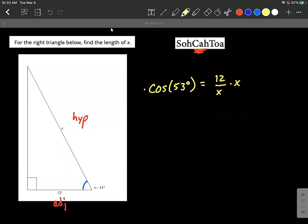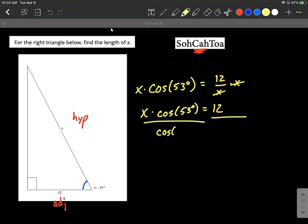We can't solve for x while it's in the denominator. So let's go ahead and multiply both sides by x. This will give us x multiplied by the cosine of 53 degrees equals 12. x is being multiplied, so to counteract that, let's use division. We'll divide both sides by cosine of 53 degrees.